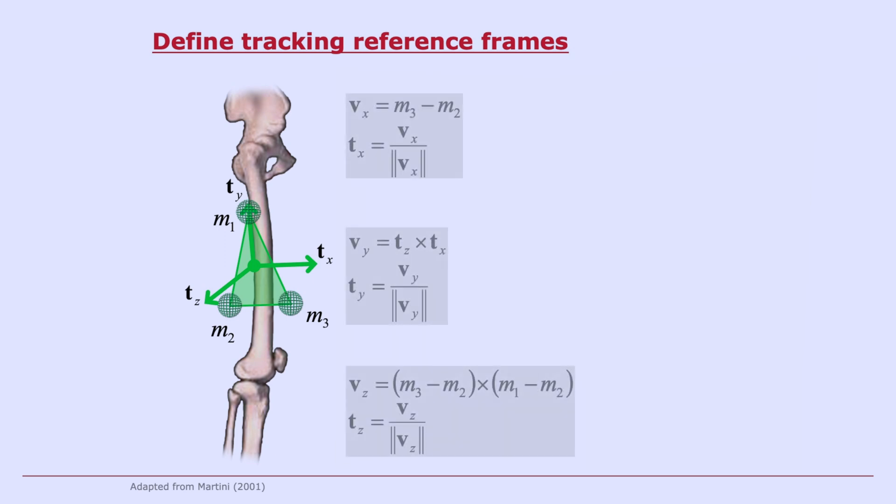So here we have markers M1, M2, and M3. We can do calculations very similar to what we saw before to compute Tx, Ty, and Tz to define a tracking reference frame, here shown on the thigh body segment.